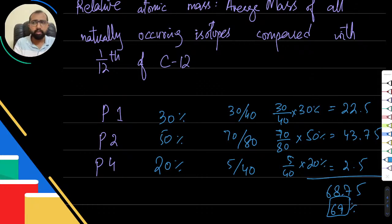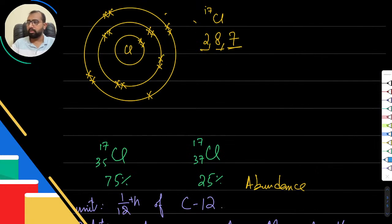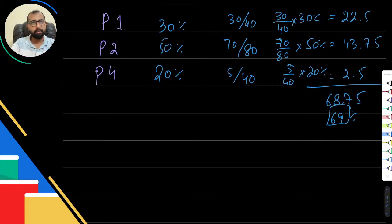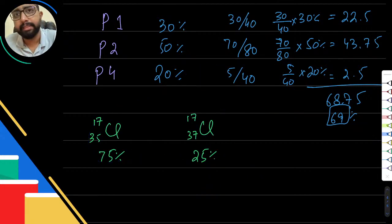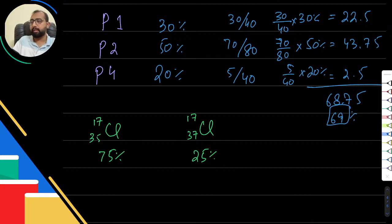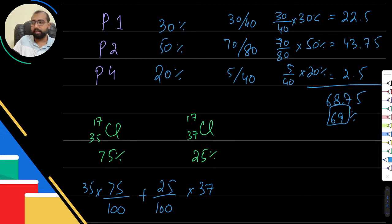This is exactly how we calculate relative atomic mass for isotopes. We'll do Chlorine-35 and Chlorine-37. Instead of marks, we have mass; instead of weightage, we have abundance. Multiply 35 by 75% and multiply 37 by 25%, then add them together. The result is 35.5.